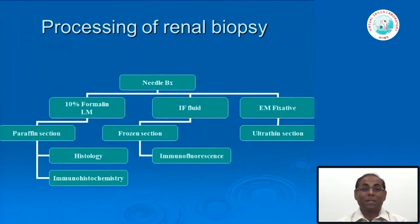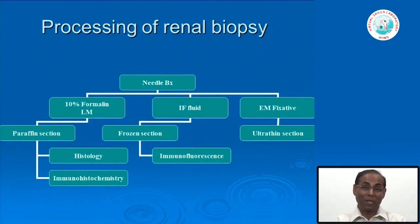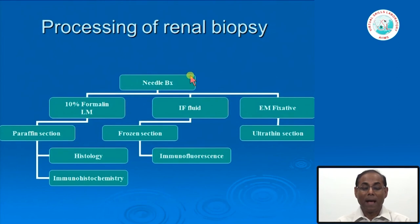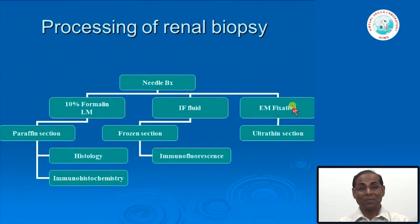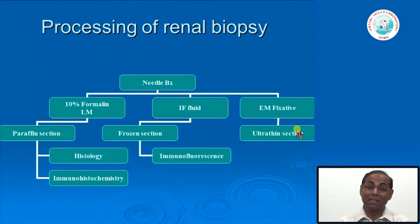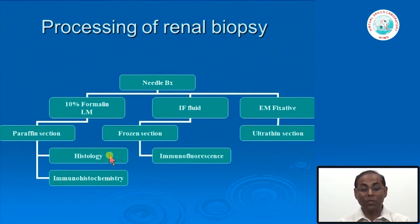To diagnose, we perform needle biopsies from the kidney. This is nowadays a painless procedure using ultrasound-guided gun technique. After that we fix the tissue in 10 percent formalin for light microscopy, put a small portion in immunofluorescent fluid for immunofluorescence testing, and fix another portion for electron microscopy. Electron microscopy is helpful for seeing podocyte abnormalities not visible under light microscopy—for example, podocyte foot process effacement requires electron microscopy. For formalin-fixed tissue, we do paraffin sections for histology and immunohistochemistry if needed.